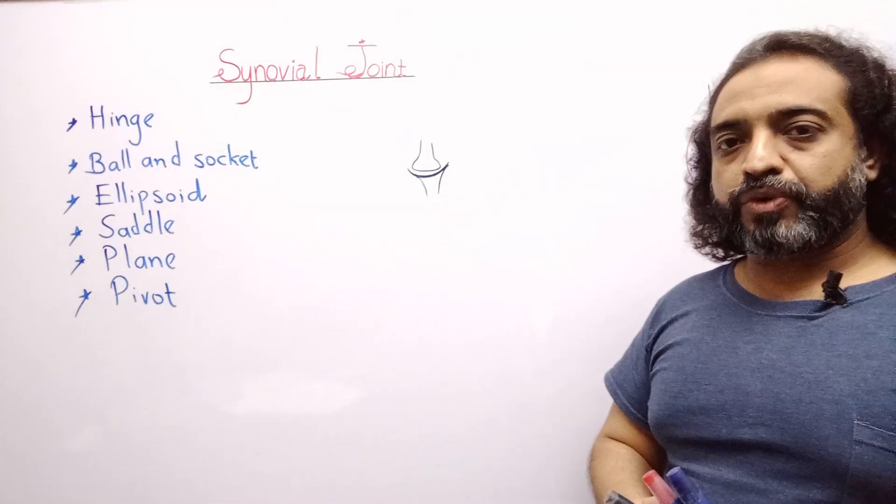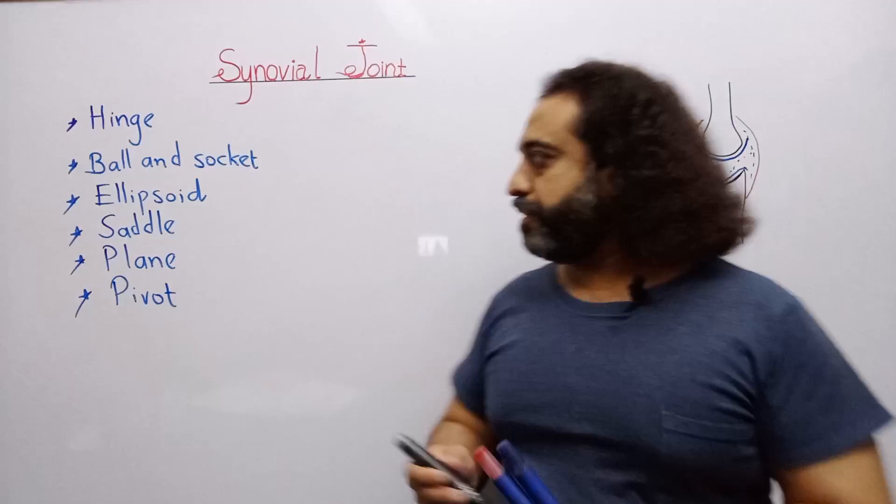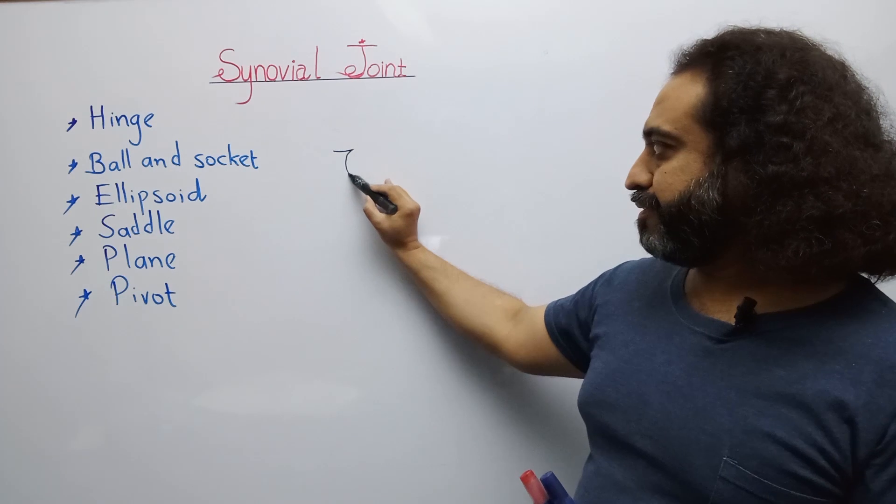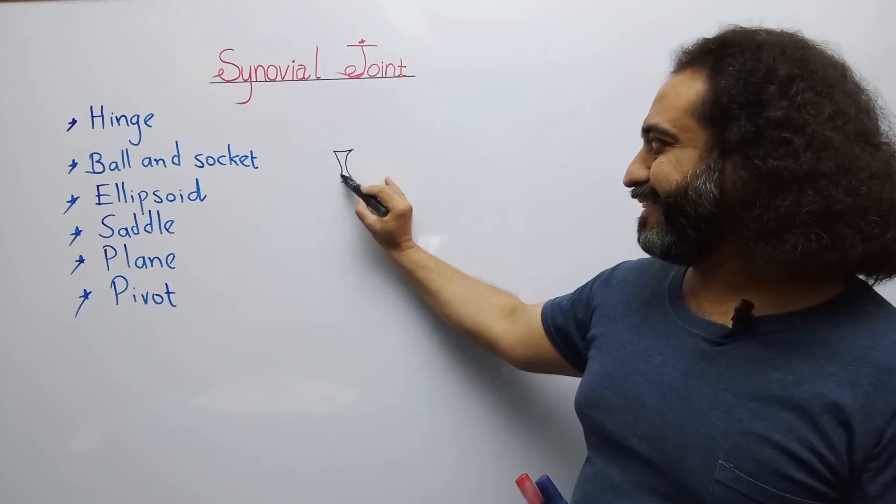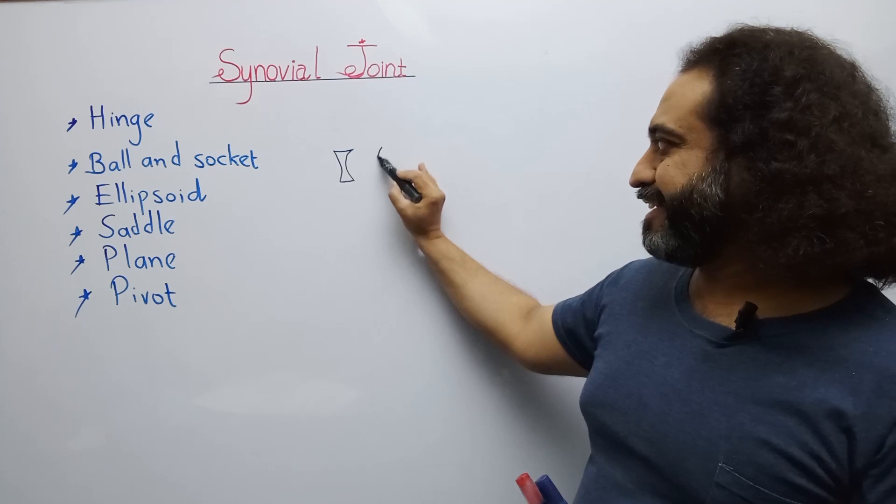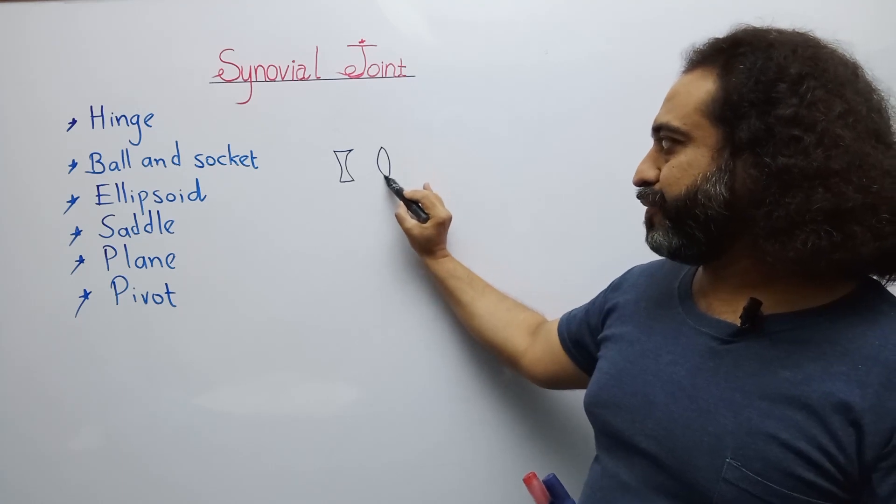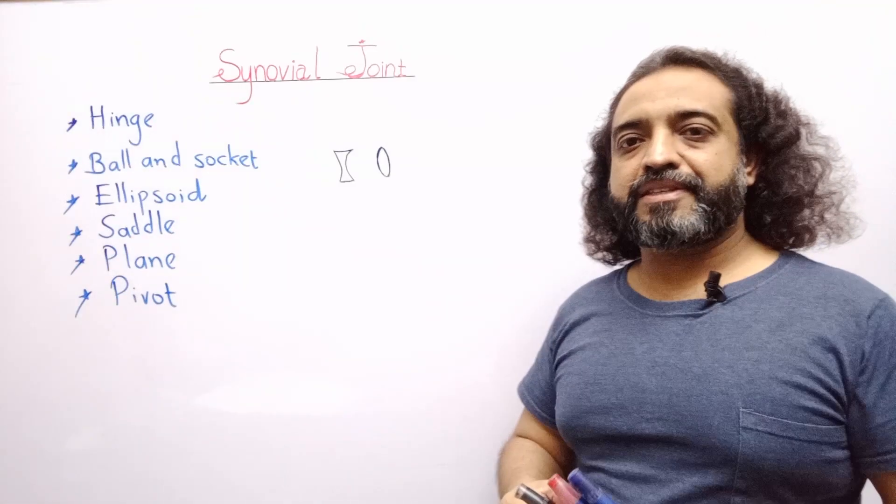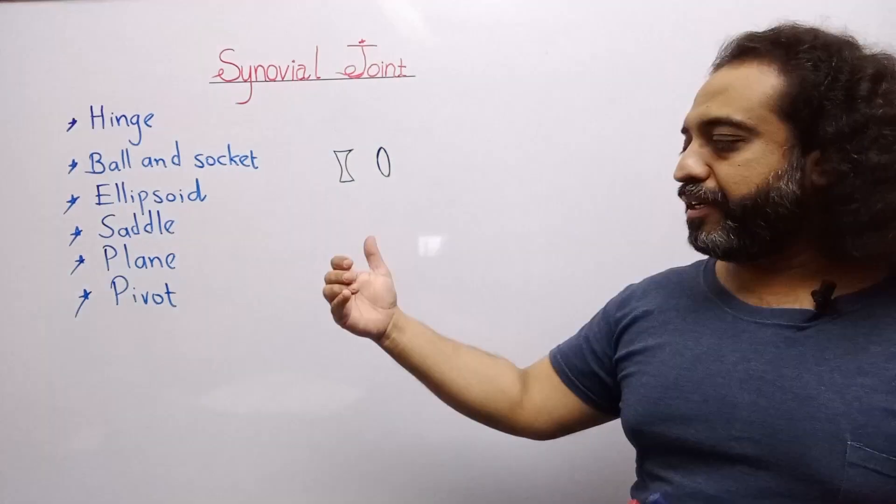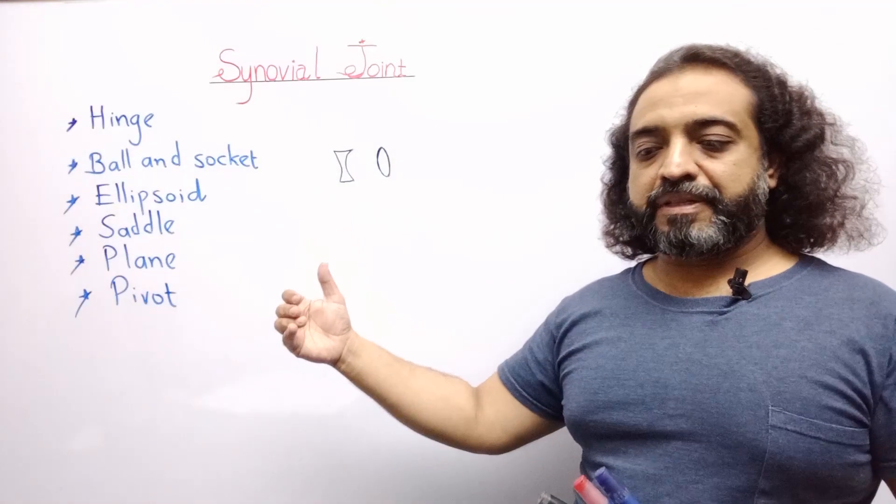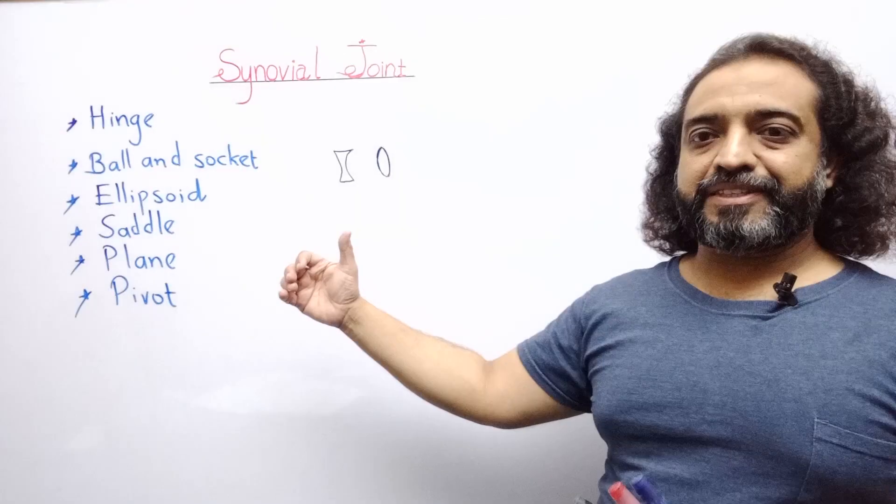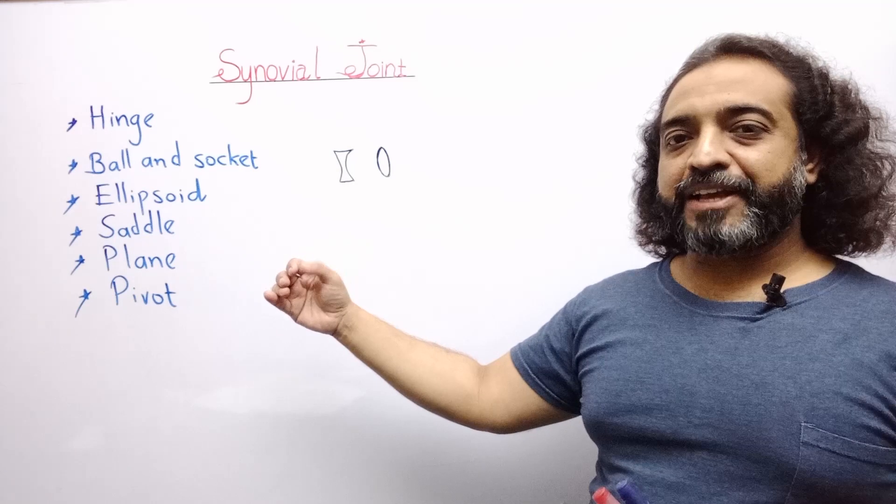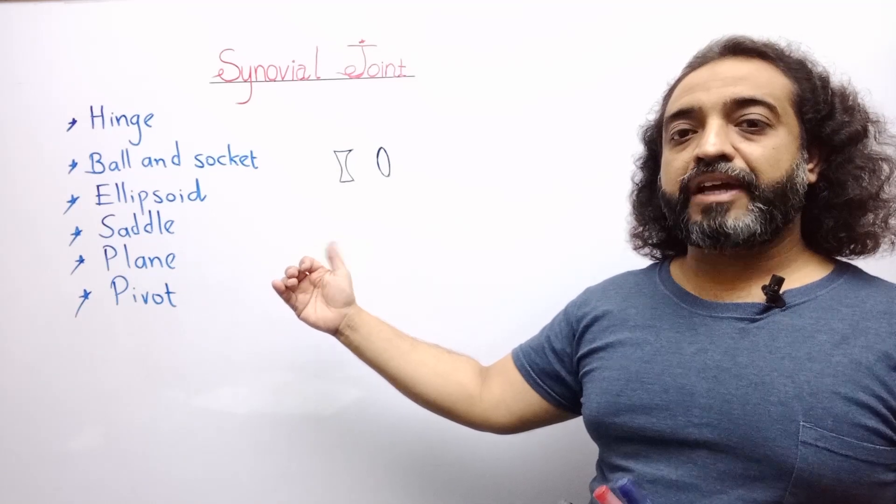Third one is the saddle joint. A saddle joint is a type of joint where a single bone possesses two basic structures: convex as well as concave. They possess convex and concave structure simultaneously. For example, the joint in our metacarpals and carpals, for example in the thumb. Saddle is actually a structure which is used in horse riding.